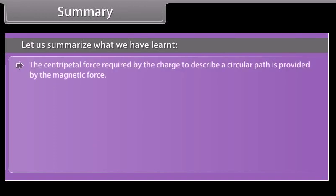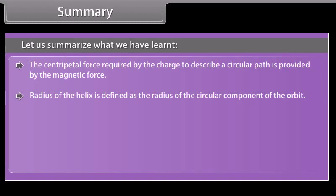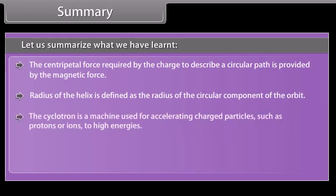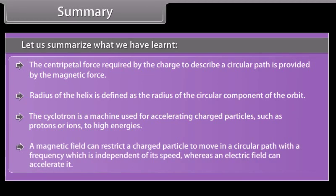The centripetal force required by the charge to describe a circular path is provided by the magnetic force. The radius of the helix is defined as the radius of the circular component of the orbit. The cyclotron is a machine used for accelerating charged particles such as protons or ions to high energies. A magnetic field can restrict a charged particle to move in a circular path with a frequency independent of its speed, whereas an electric field can accelerate it.